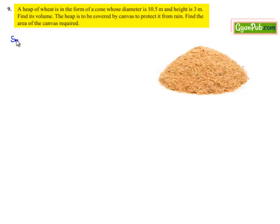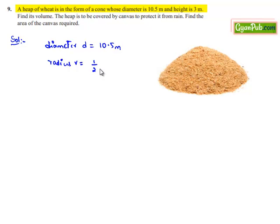Now moving on to solution. The heap of wheat is in the form of a cone. Let us consider the figure as shown. Here the diameter of the heap is given as 10.5 meters. Let us convert this into the radius R which will be equal to half of the diameter, that is half of 10.5 meters, that is 5.25 meters.